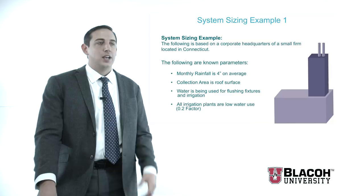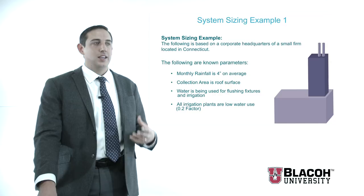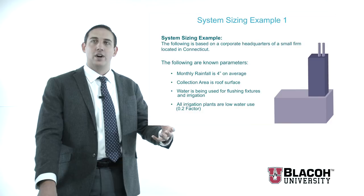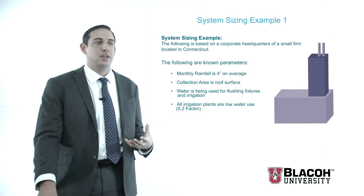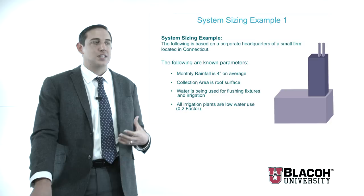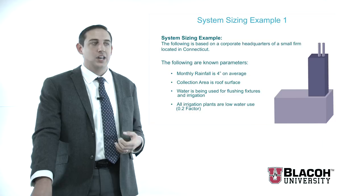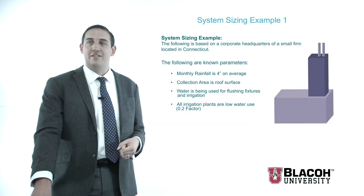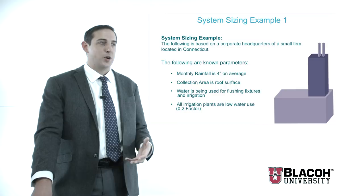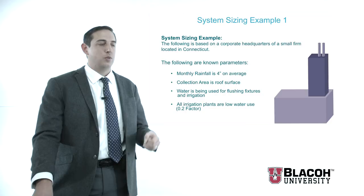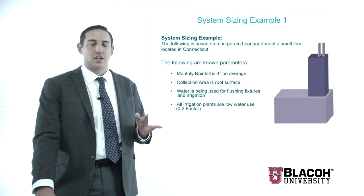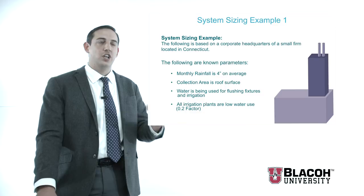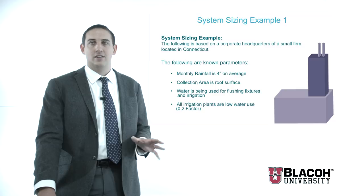Moving away from the cistern, we're going to utilize the tools we've covered for sizing both the available rainfall and water use, and compare them to see the overall feasibility of the system. We're going to walk through an example of rainwater system sizing. This is a real building — a small corporate headquarters located in Connecticut. The average monthly rainfall in Connecticut is very level, about four inches of rainfall every month. We're going to calculate the collection area and use this water for both flushing fixtures and irrigation, with low water use plants.